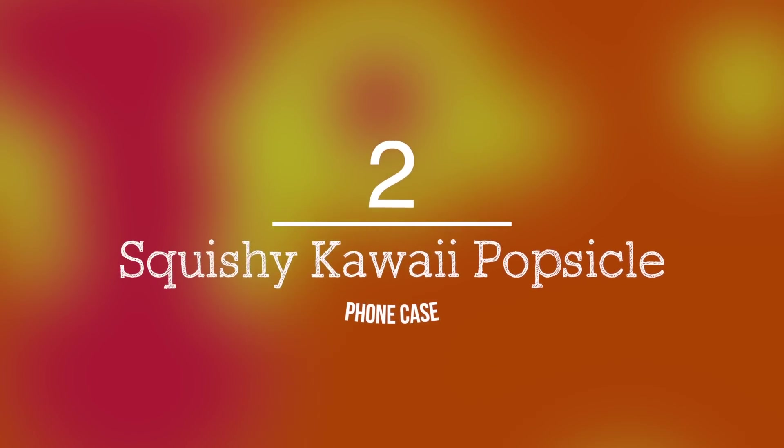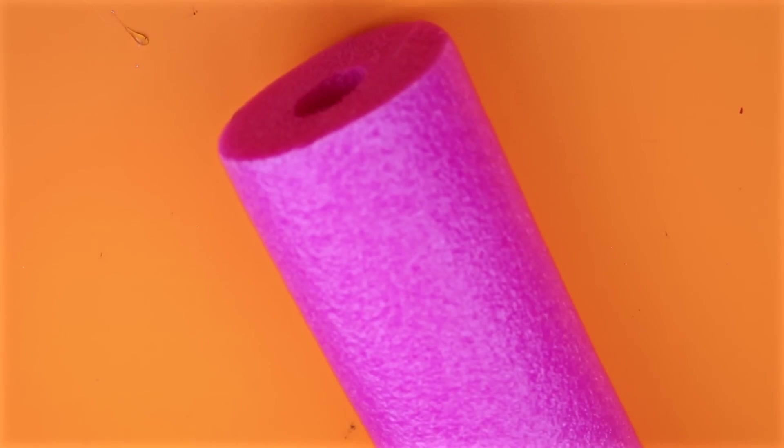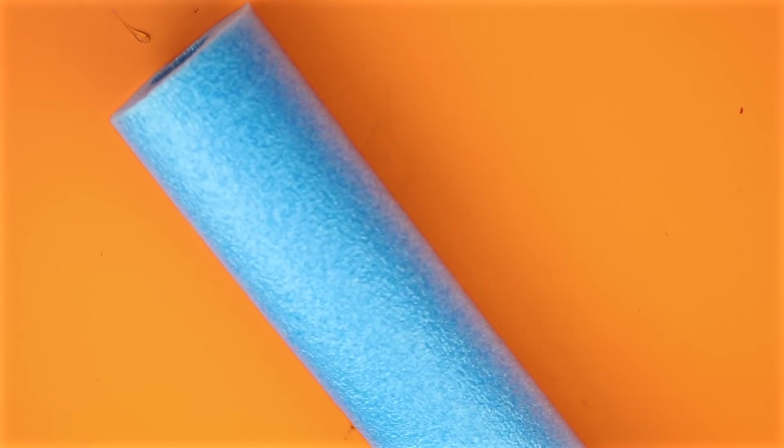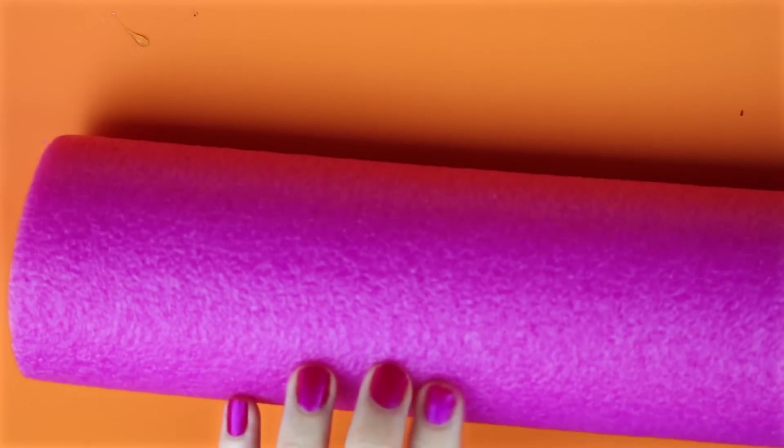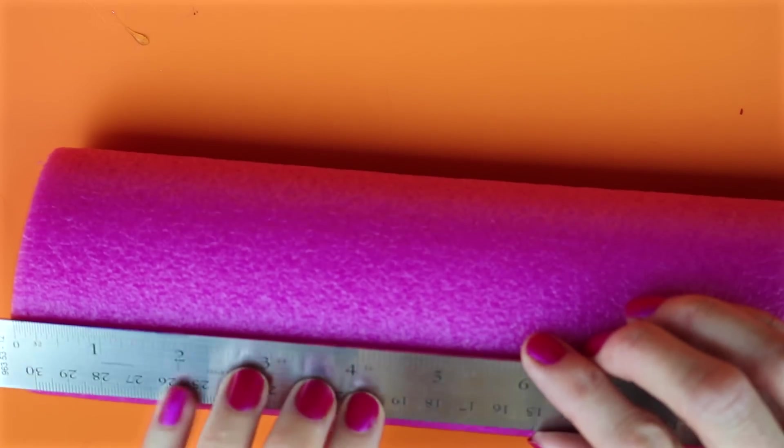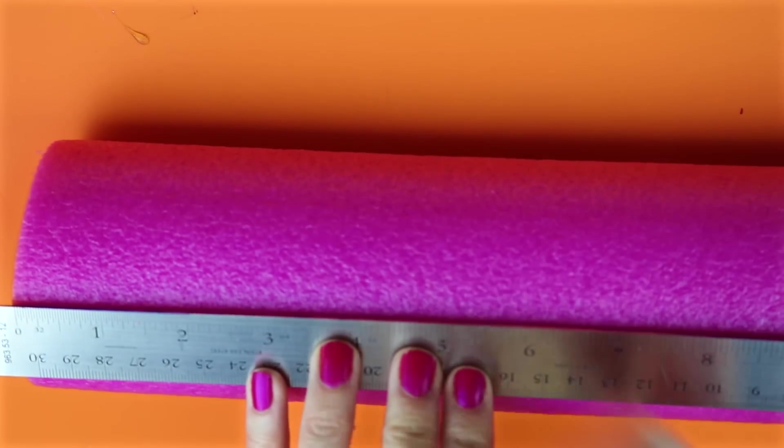The second DIY phone case is a Squishy Kawaii Popsicle. For this one you will need a foam noodle. Any size will work. To get started I marked my pool noodle off at 3 inches and this will really depend on the size of your phone case.